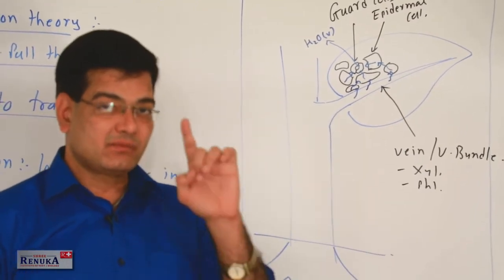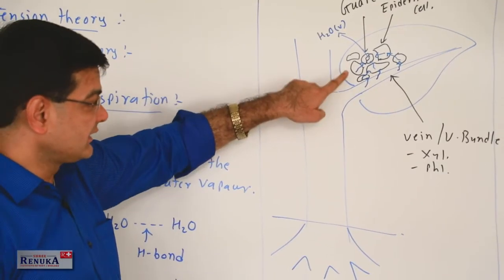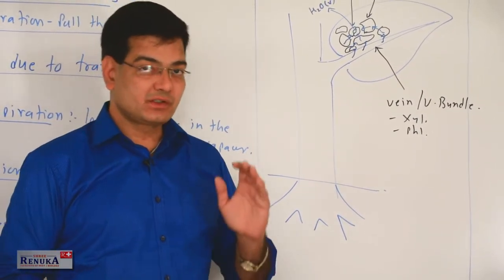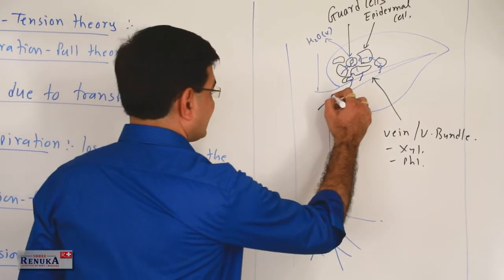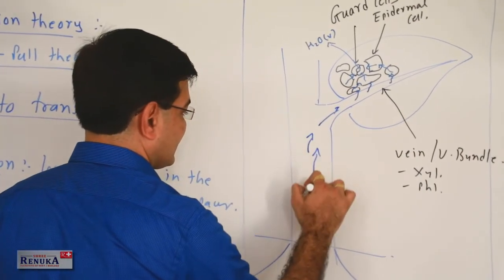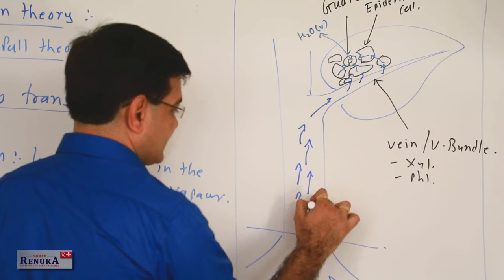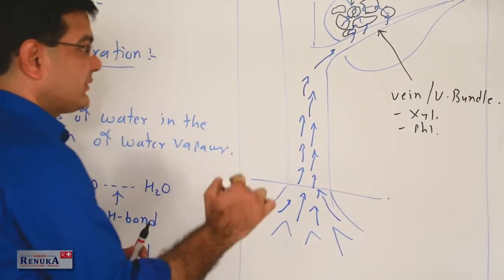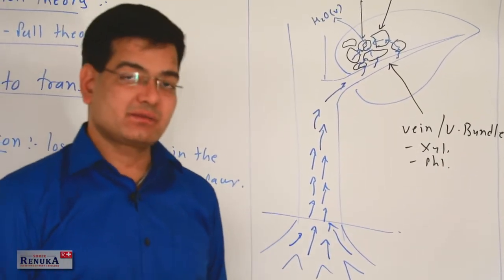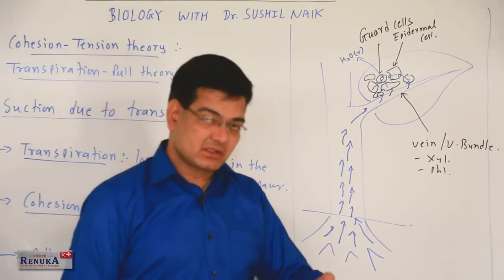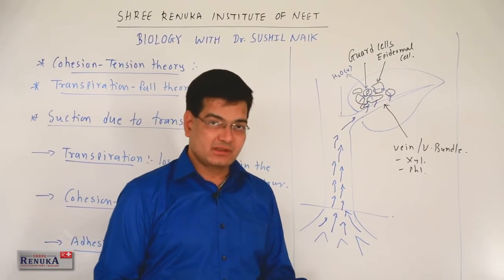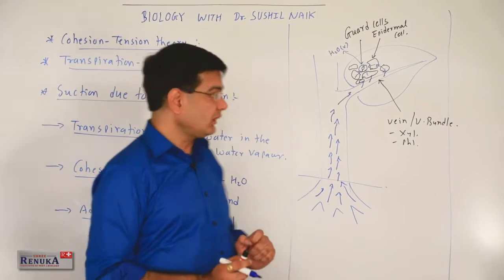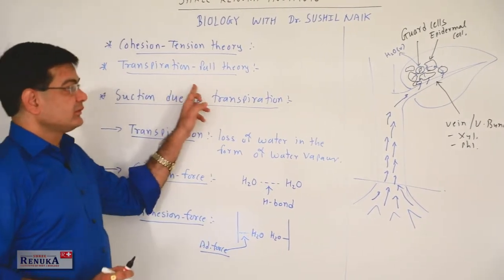This decreasing gradient of water potential develops from the guard cell through the stem and down to the root. Due to this force, water is absorbed from the surrounding region and the ascent of sap is generated. This is why transpiration is responsible for generating a pull — it is called suction due to transpiration, or the transpiration pull theory.